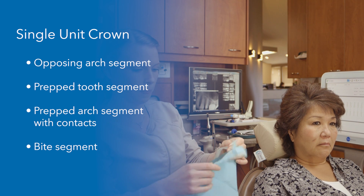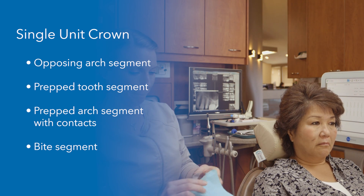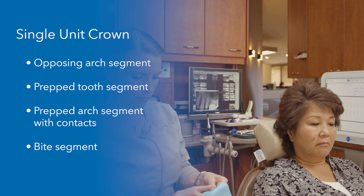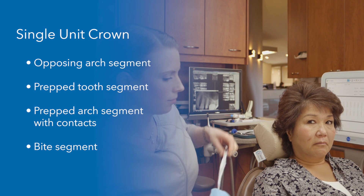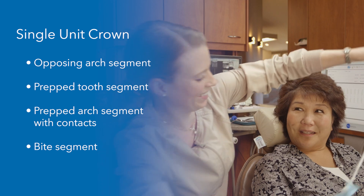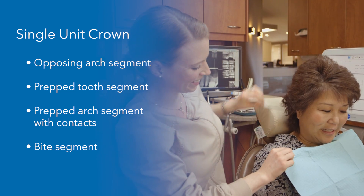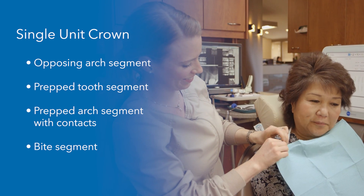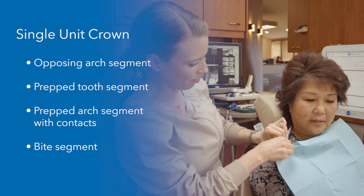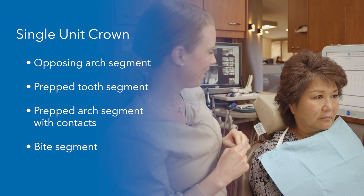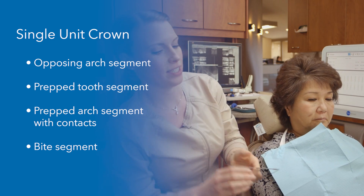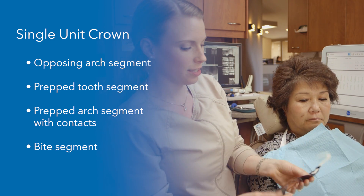I will include the anatomy from the most posterior tooth to the cuspid in the prepared quadrant. There are four recommended scan segments in the sequence for a single unit crown case: the opposing arch, the prepped tooth, the prepped arch, and the bite.